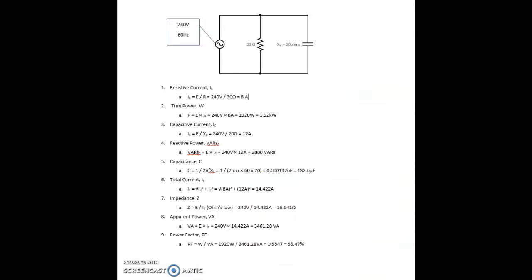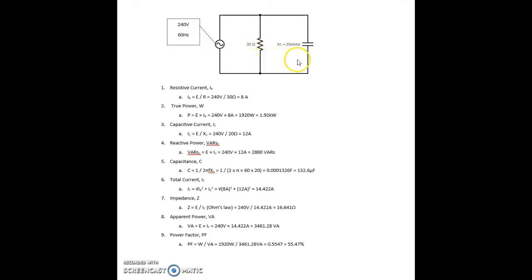And now for the parallel circuit. We're given a simple parallel circuit with an applied voltage of 240 volts AC at 60 hertz. We have a 30 ohm resistor wired in parallel with a capacitor that has a capacitive reactance of 20 ohms.